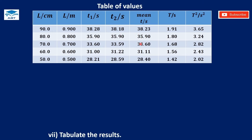This is the table of values. The numbers under each column should be in the same number of decimal places. The length in centimeters is in one decimal place; the length in meters is in three decimal places; T1 and T2 are in two decimal places; and T² is also in two decimal places.